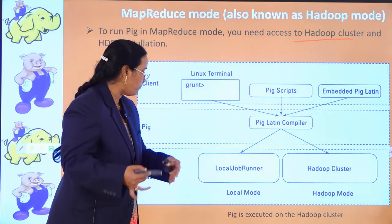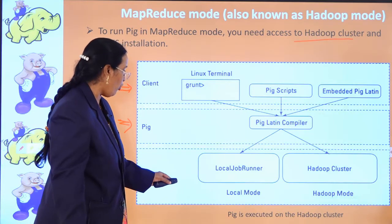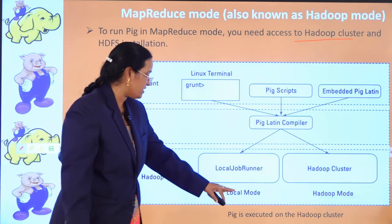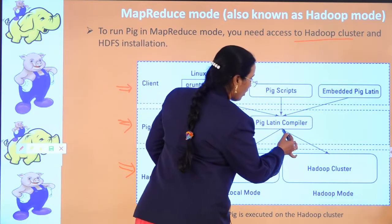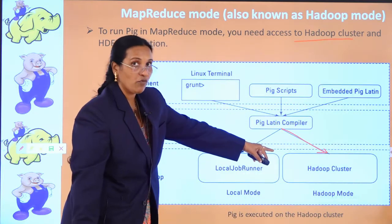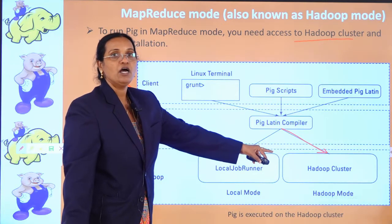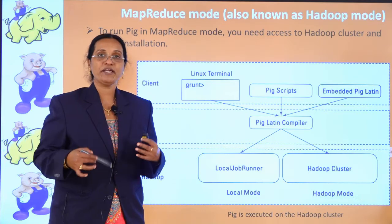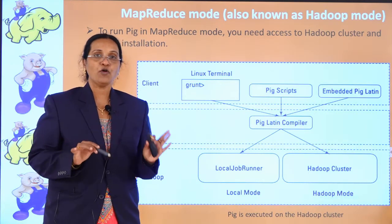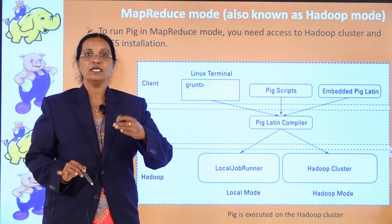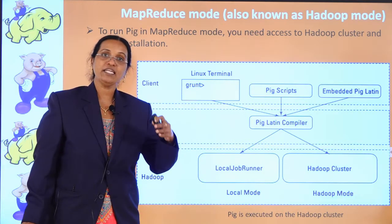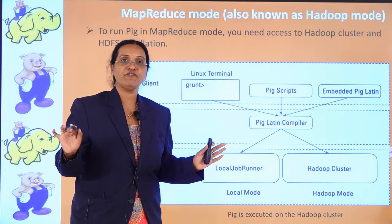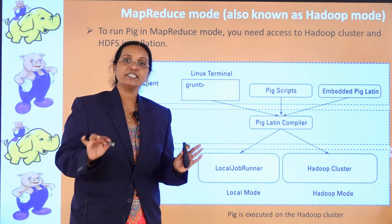During execution, whenever Pig wants data, it connects to Hadoop mode and runs either the local job runner or the Hadoop cluster. In Hadoop mode, the Pig commands make use of whatever data is in HDFS. To summarize: Hadoop mode uses the Hadoop cluster and HDFS datasets, while local mode does not connect to HDFS and runs purely locally.